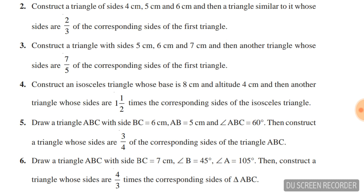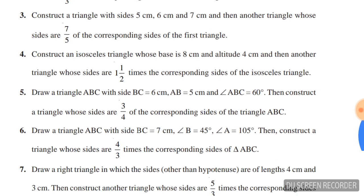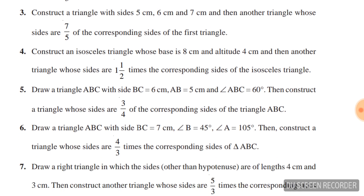Question number three: construct a triangle with sides 5 cm, 6 cm, 7 cm, and then another triangle whose sides are seven-fifths times the corresponding sides of the first triangle.